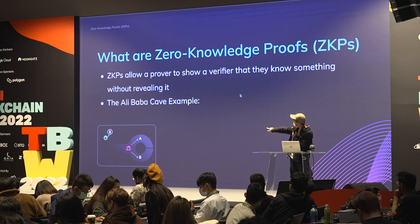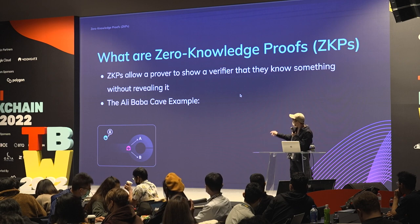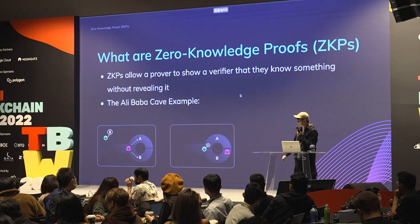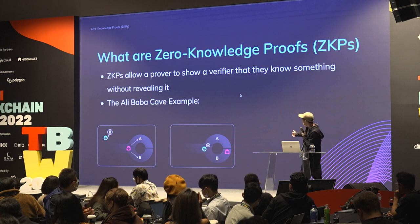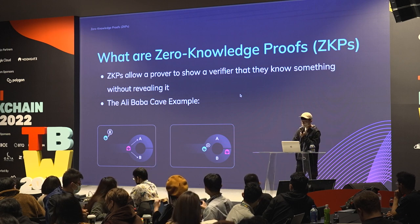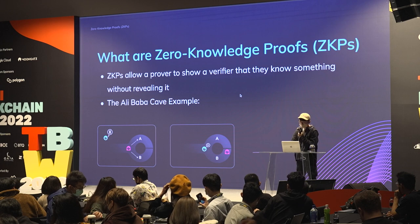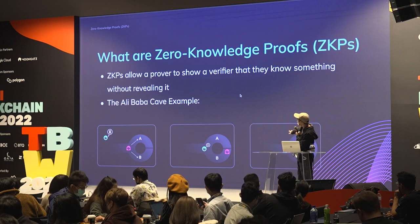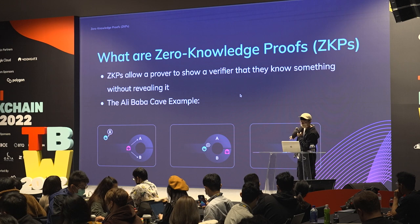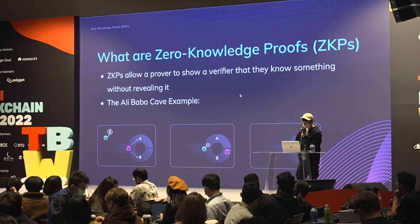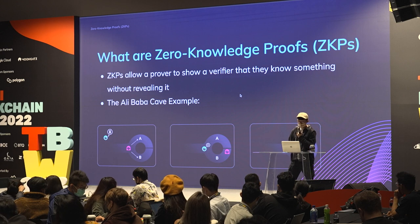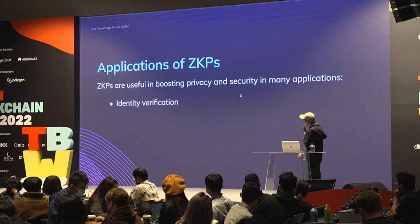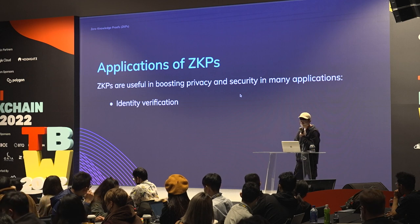Alice knows how to navigate the secret door at the back of the cave and needs to prove this to Bob without telling him the secret. She would just walk in from entrance A and exit from entrance B, showing Bob she knows the secret. That's the basic idea of ZKPs, though of course it's a bit more complicated than that.